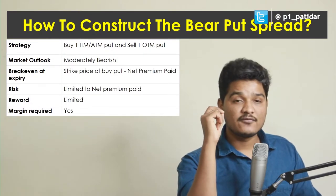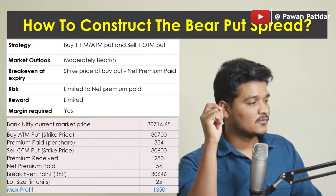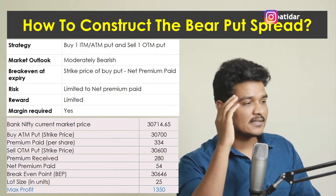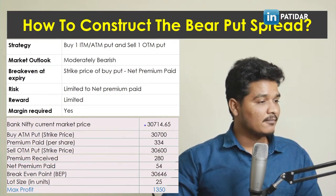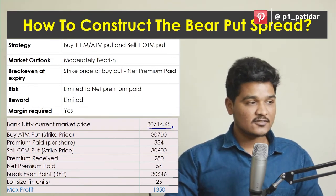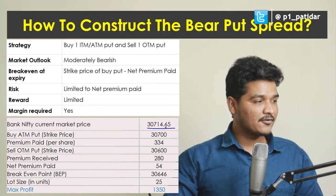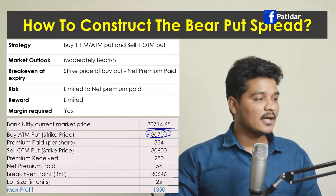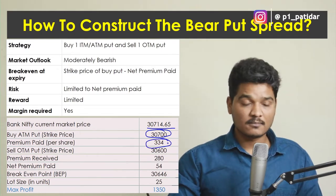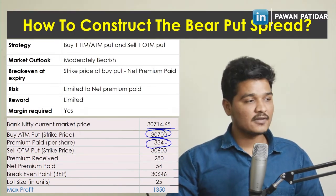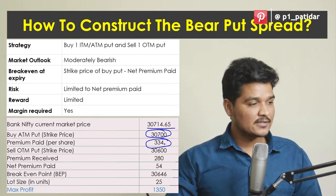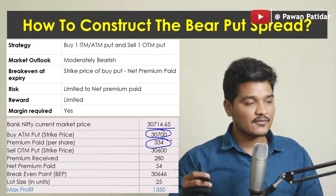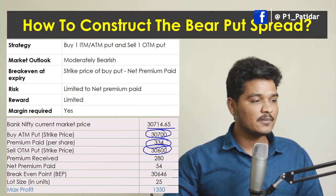Let's look at the Bank Nifty example, since my view for Monday is bearish. The Bank Nifty current market price is 30,714.65. To buy the at-the-money put, the strike price is 30,700 and the premium is 334 per quantity. Since Bank Nifty trades in a lot size of 25, you multiply by 25 to get the rupee amount. For the sell leg, the out-of-the-money put is at 30,600 — a 100-point gap below.